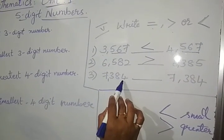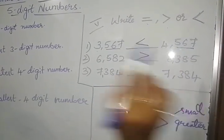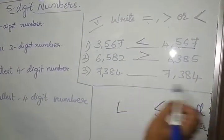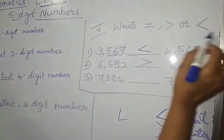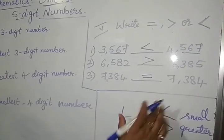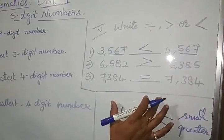Here you see, 7,384 dash 7,384. Both the numbers are same, then what you will put in the dash there? Equal. I hope children, you understood this.